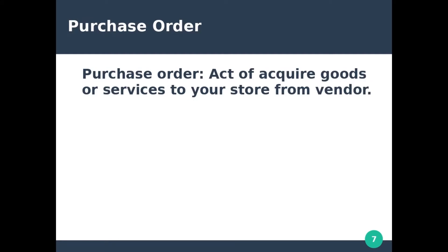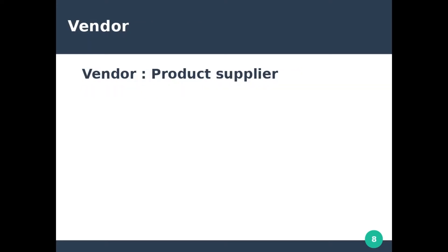A purchase order is an act of acquiring goods or services for your store from a vendor. It's like you are buying a new product, or you are stocking up — buying a product or restocking one you had before.